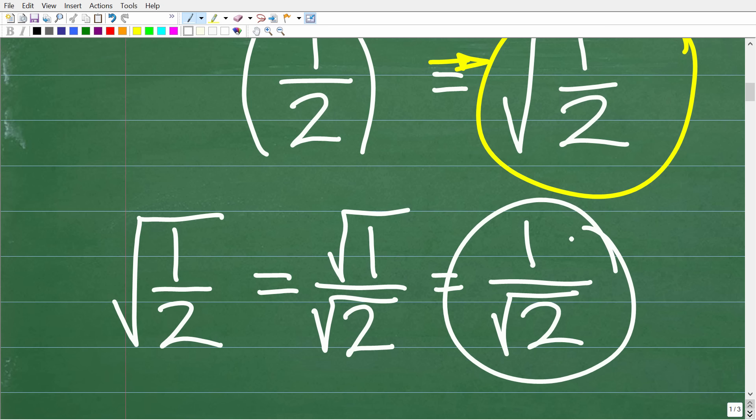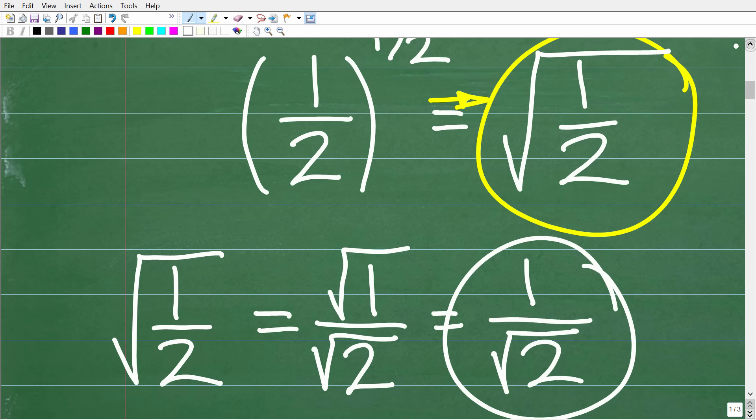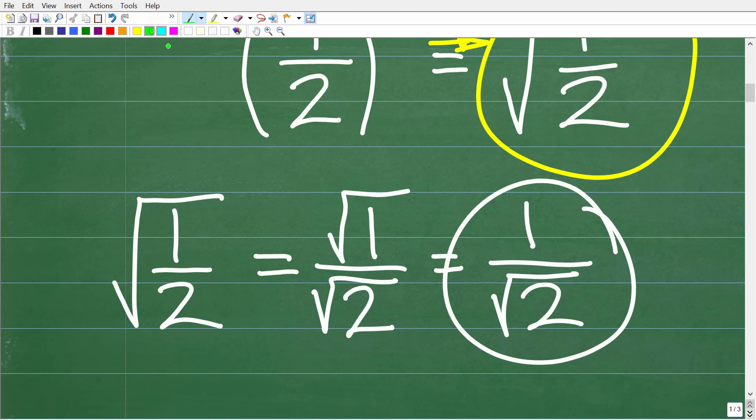So this looks pretty good as well, right? We're writing this simpler, but we have a major problem right here. And what is that? Well, the problem is we're trying to divide by an irrational number, and this is not allowed in mathematics.